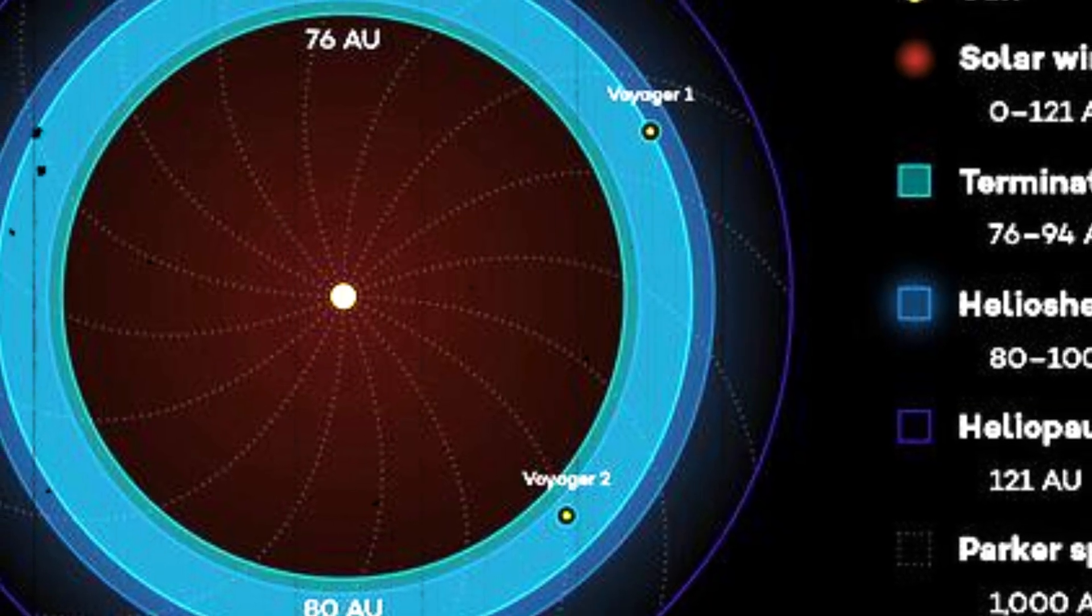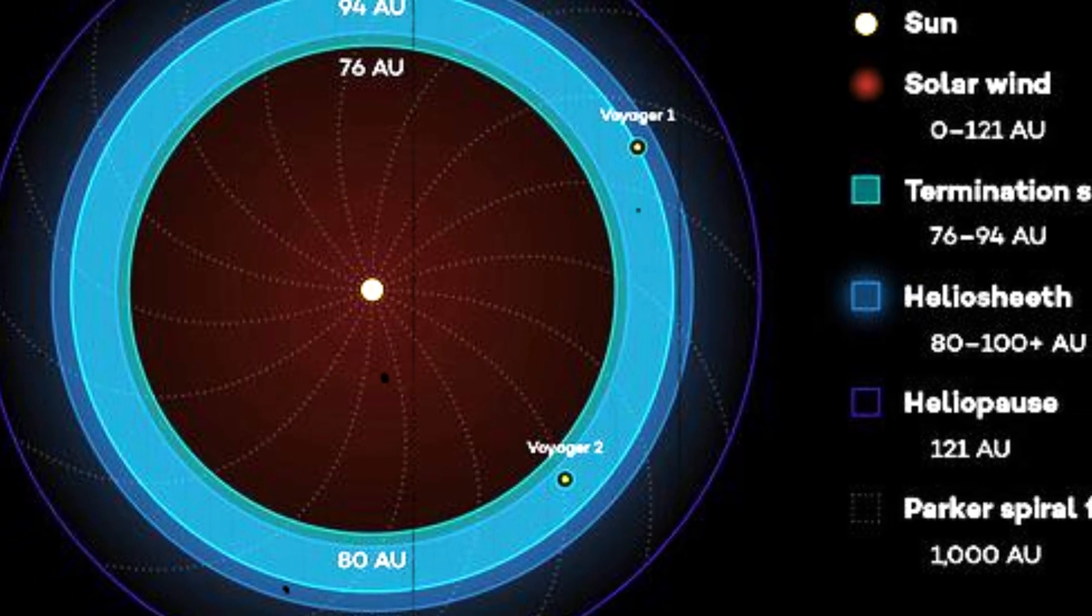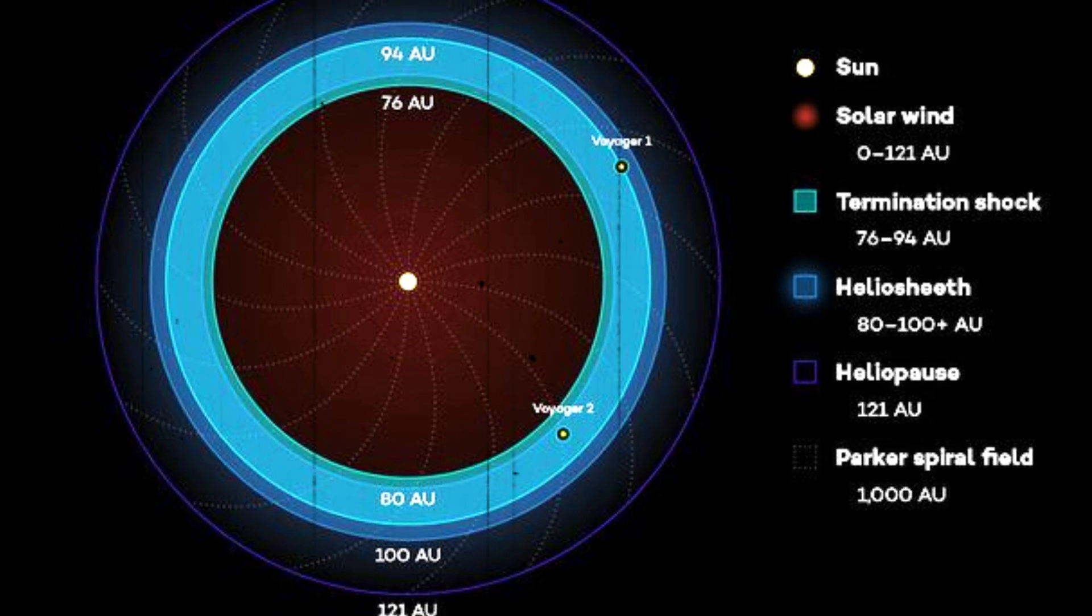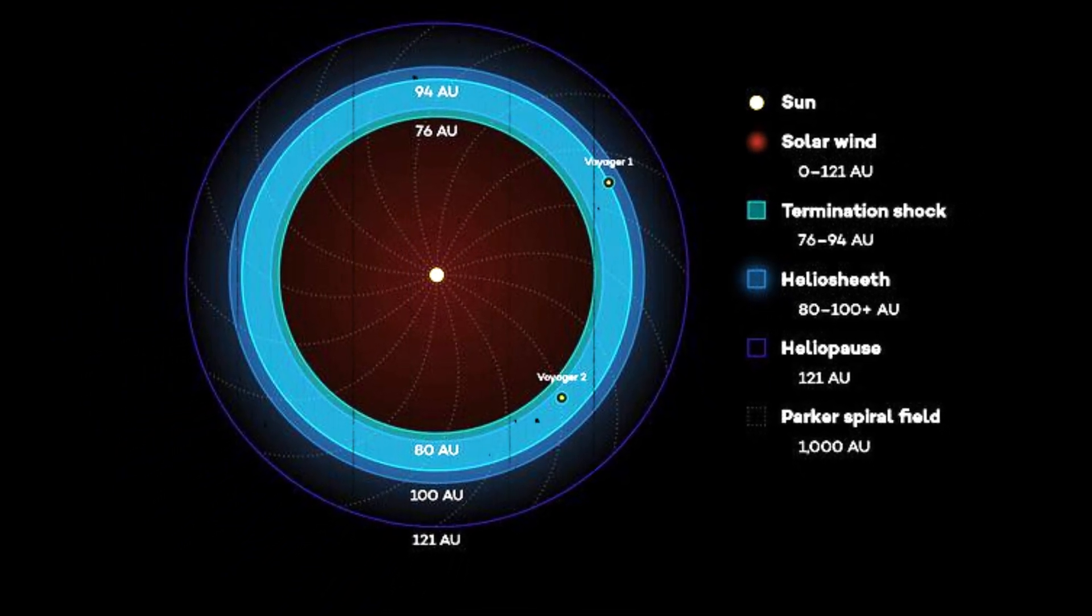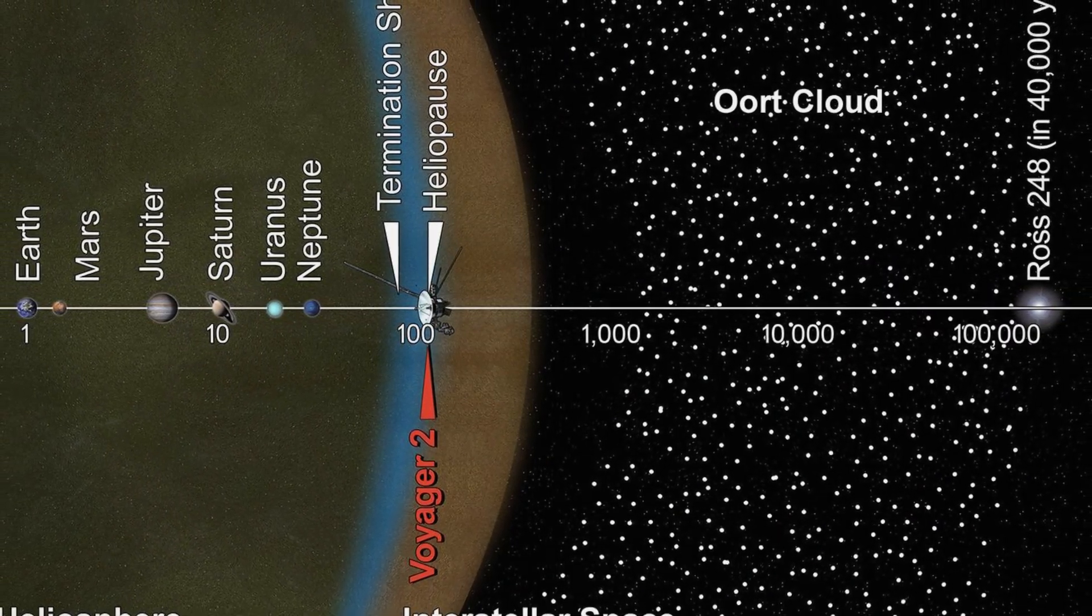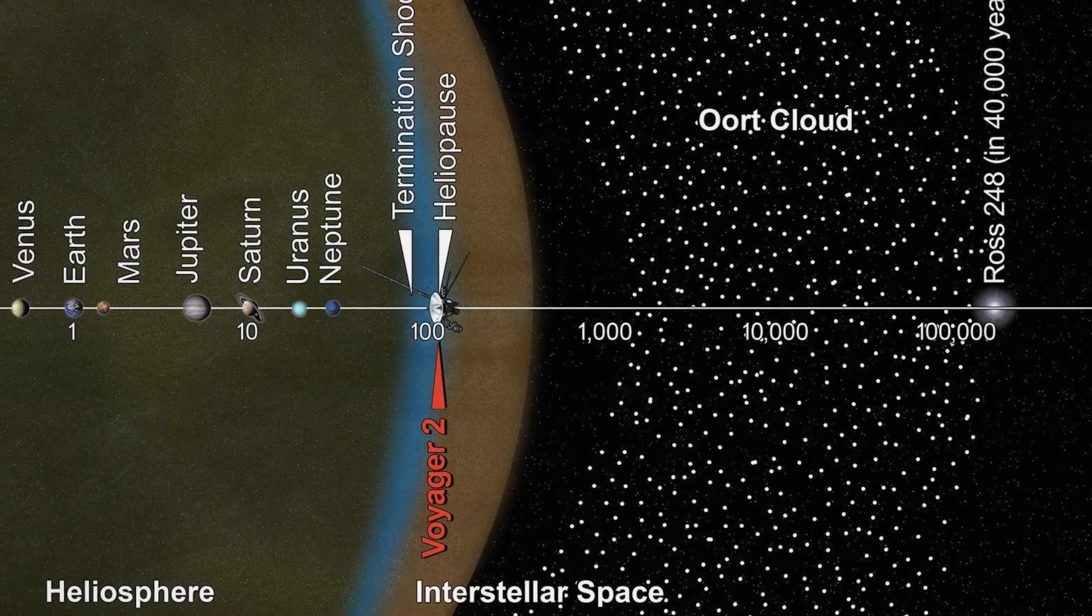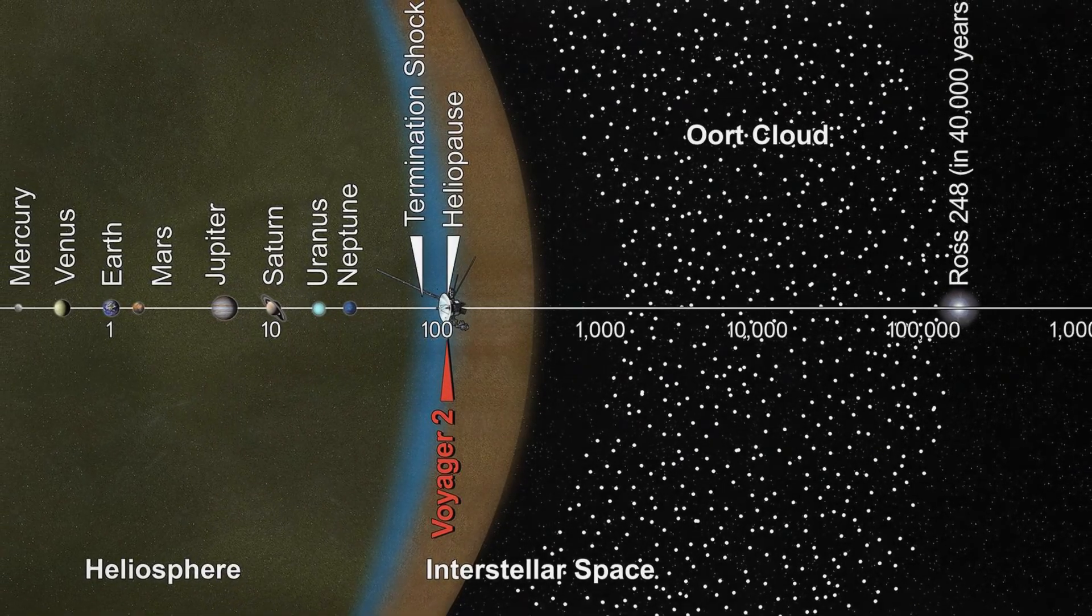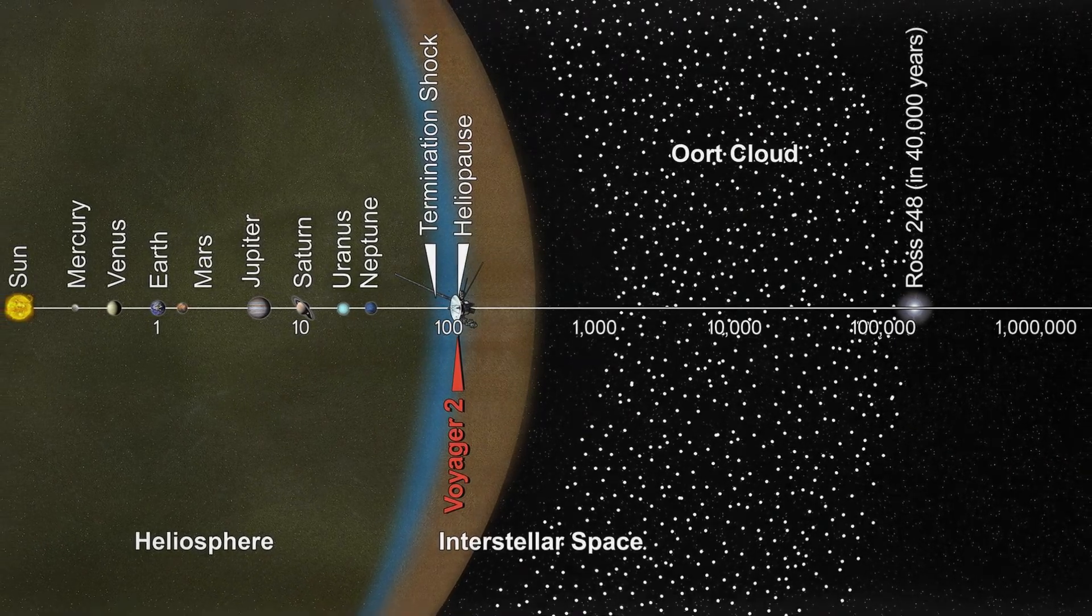Intriguingly, the heliosphere's radius is dynamic, akin to the expansion and contraction of a lung. Dependent on the sun's activity, the heliosphere fluctuates in size over an approximate 11-year solar cycle. Voyager 2's subsequent encounter with the heliosphere's edge at a different time and distance from the sun corroborated this variability, highlighting the fluidity of its boundaries. As Ed Stone, Voyager's project scientist and a Caltech physics professor, aptly notes,